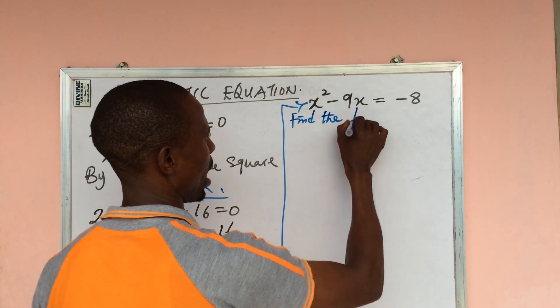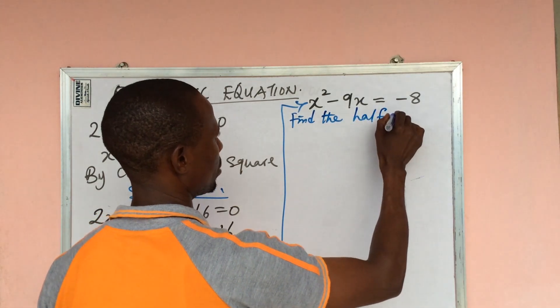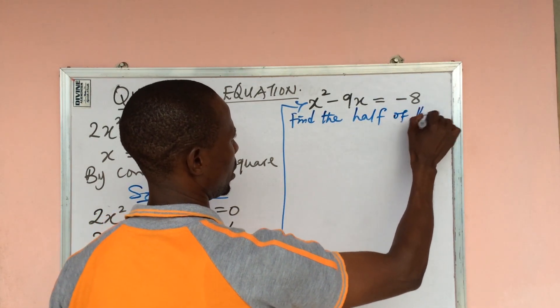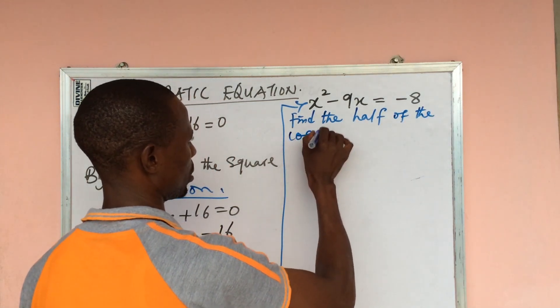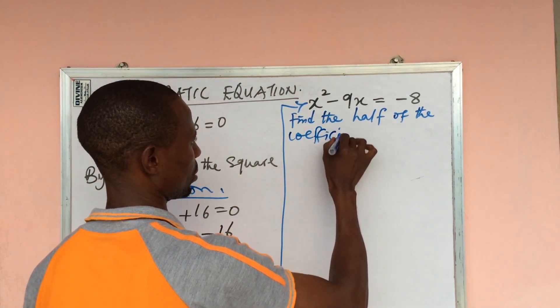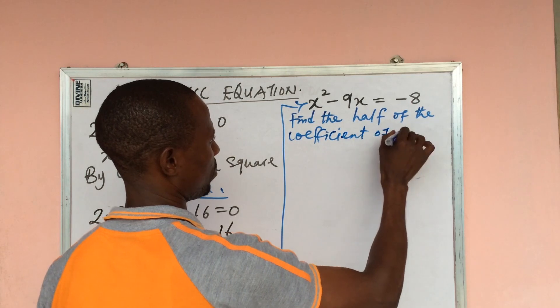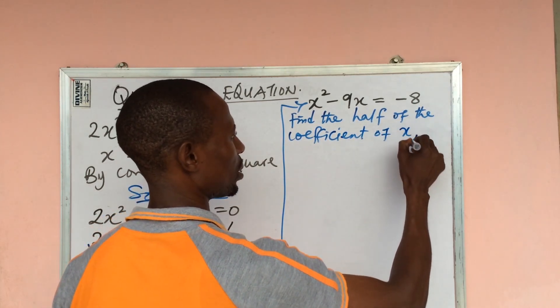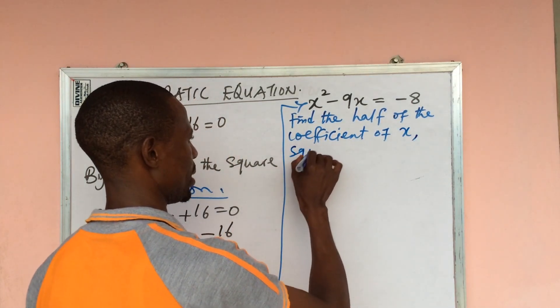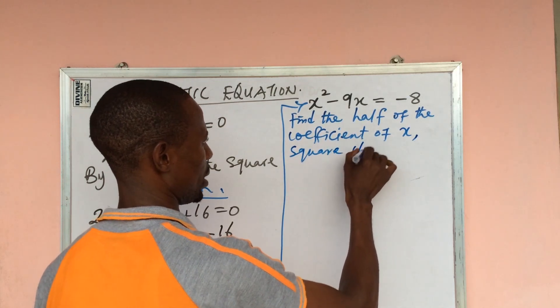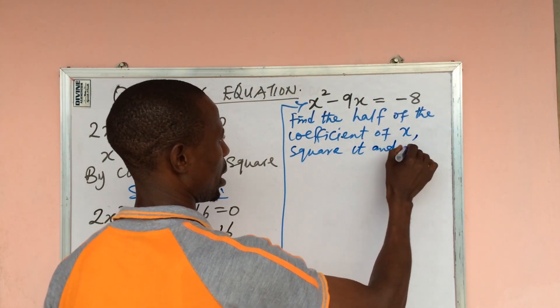Find the half of the coefficient of x, square it, and add to both sides.